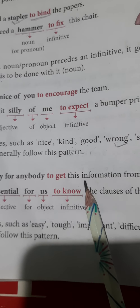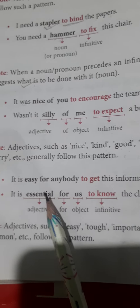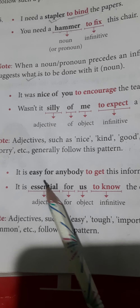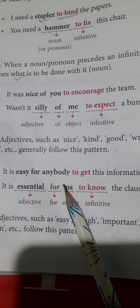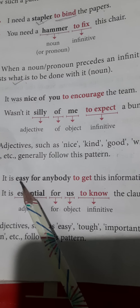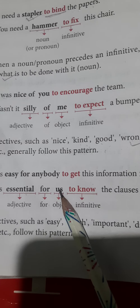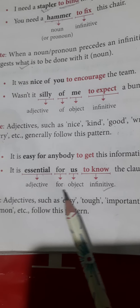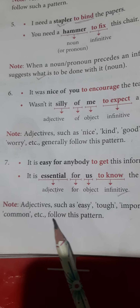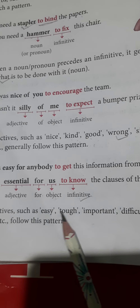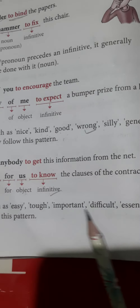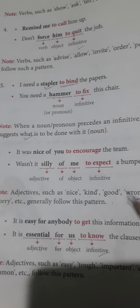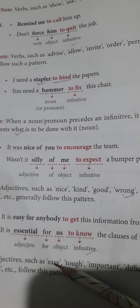'It is easy for anybody to get this information from the net.' 'It is essential for us to know the clauses of the contract.' Here 'easy' and 'essential' are adjectives; 'for' is the preposition used after them; 'anybody' and 'us' are objects; and 'to get' and 'to know' are infinitives. We can frame sentences using adjectives: easy, tough, important, difficult, essential, and necessary. As we know, practice makes a man perfect — the more practice we do, the more efficiency we will get.